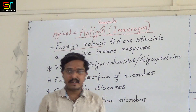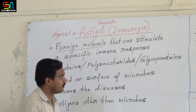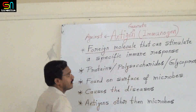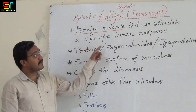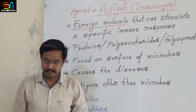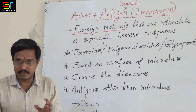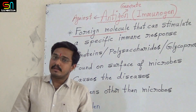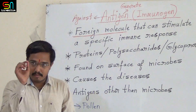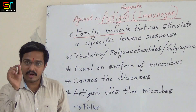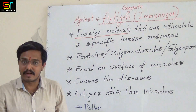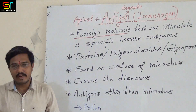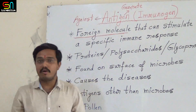Let us see what is the correct definition of antigens. An antigen is a foreign molecule that can stimulate a specific immune response. At the end of the immune response, there is production of antibodies. When antigens come into the body, antibodies are produced. So the molecule which stimulates production of antibodies inside the body is referred to as an antigen, or we can say they are foreign molecules that can stimulate immune response.